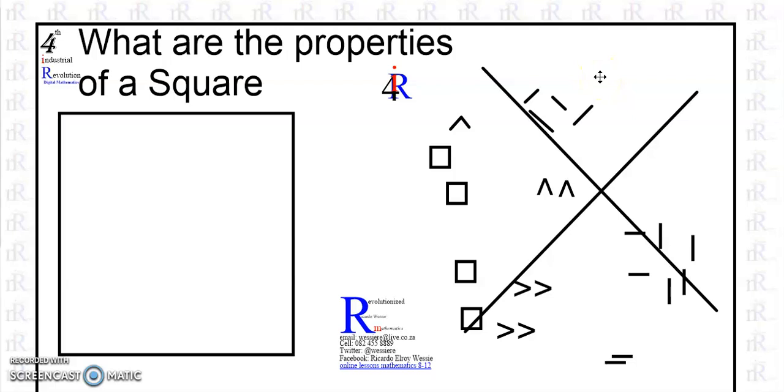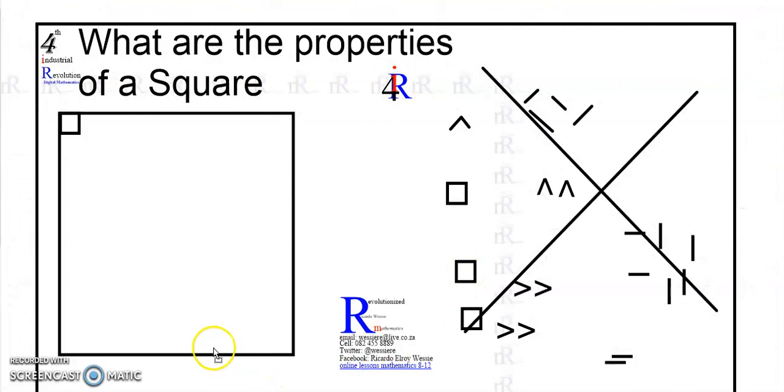Firstly, we will look at the properties of a square. Most of us will generally know that a square has right angles. Most of us would know that a square also has four equal sides.